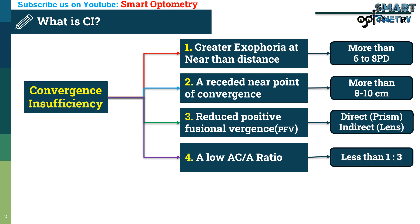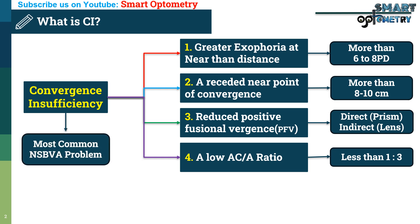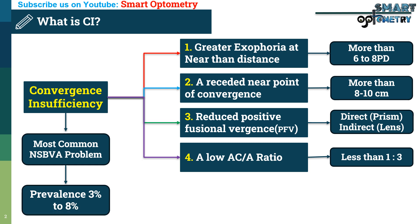Among all non-strabismic binocular vision problems, convergence insufficiency is the most common. In different studies, it is found that the prevalence of convergence insufficiency is 3% to 8%.